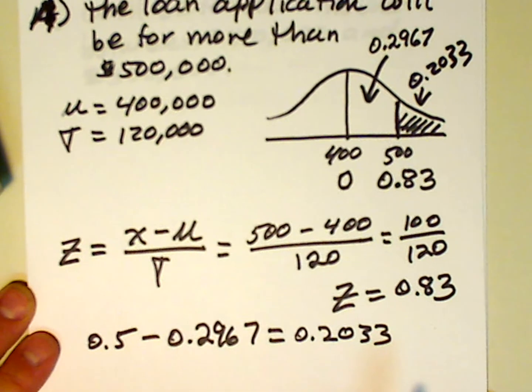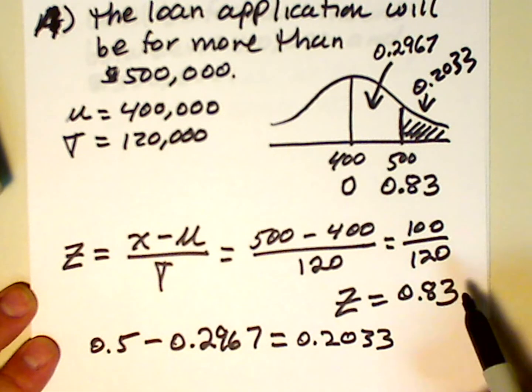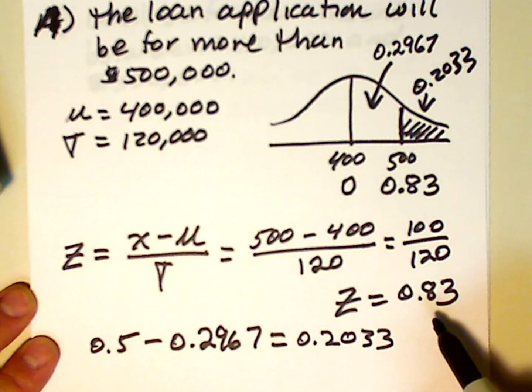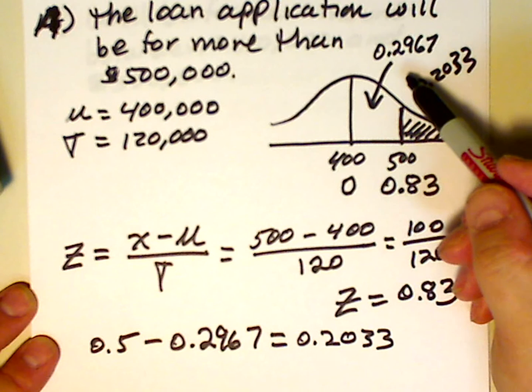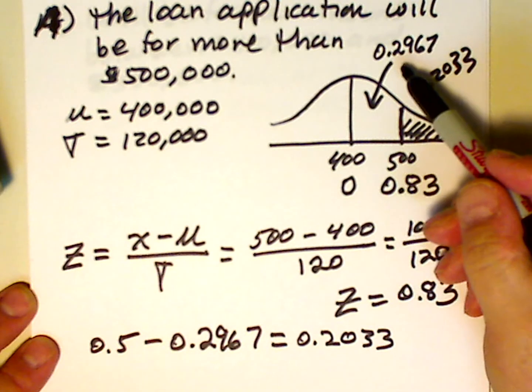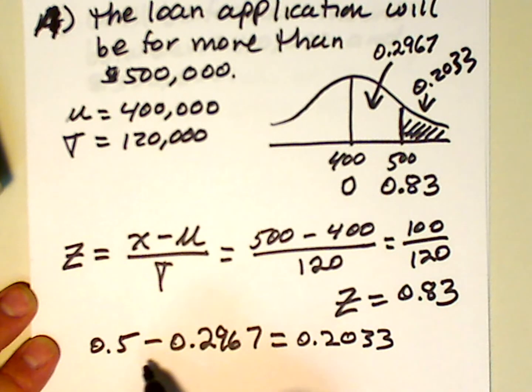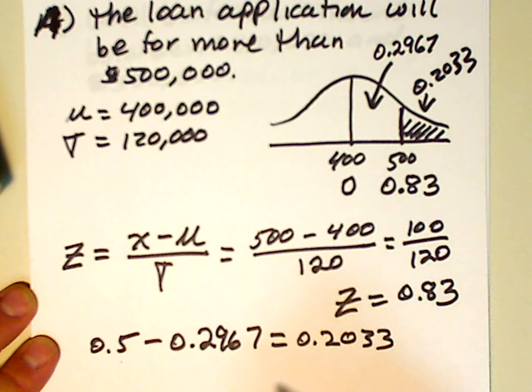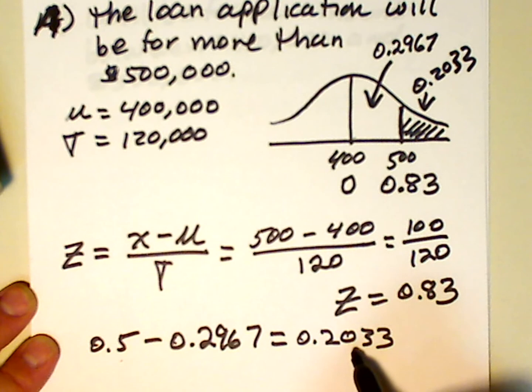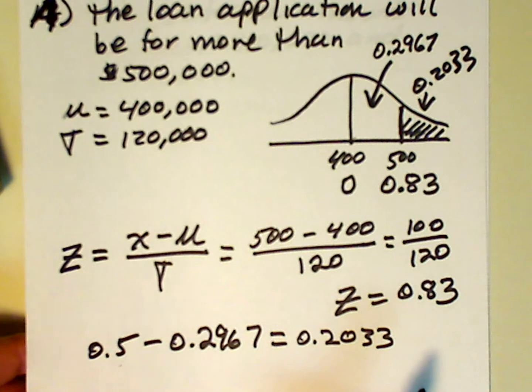That doesn't get much easier than that, folks. We first calculated a z-value associated with 500. That turned out to be 0.83. We looked up in the table the area from 400 to 500 associated with 0.83 and found it to be 0.2967. We subtracted that from 0.5 since the total area to the right of the mean is 0.5. And we came up with 0.2033. Well, that's what the area to the right of 500 is.